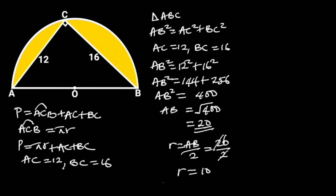Now we know the radius, let's go ahead and find the perimeter of the shaded portion. It follows that the perimeter of the shaded portion is equal to 10 pi, plus 12 plus 16, which is equal to 10 pi plus 28.